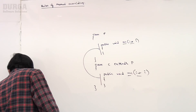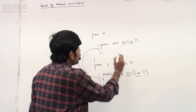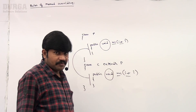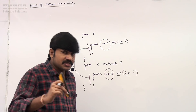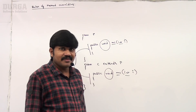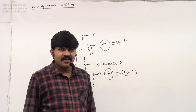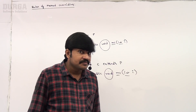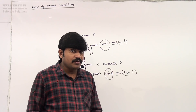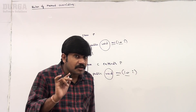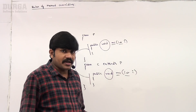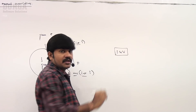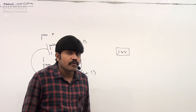What is the second rule? What about return type? Return types — must they be same or may they be different? Return types must be compulsory same in overriding. But this rule is applicable only until Java 1.4 version.